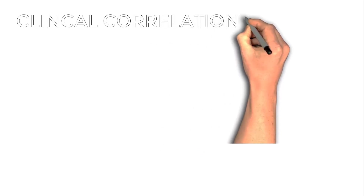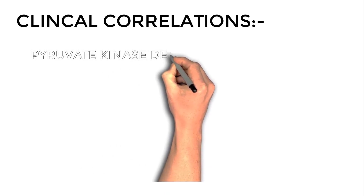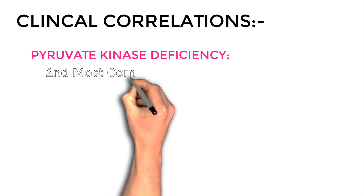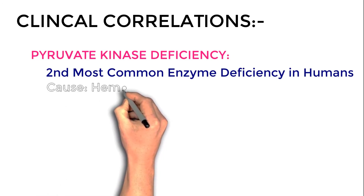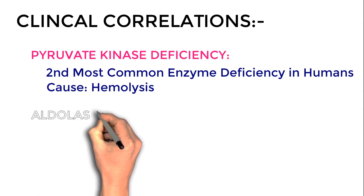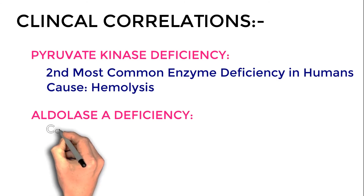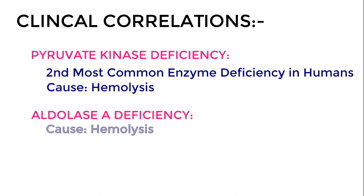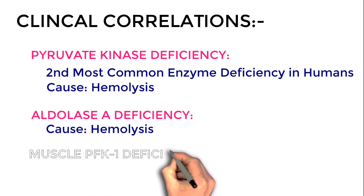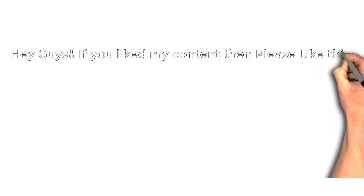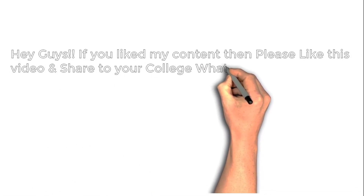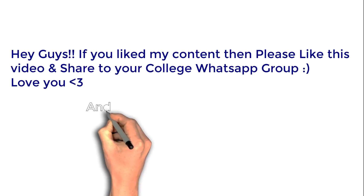Clinical correlations: Pyruvate kinase deficiency is the second most common enzyme deficiency in humans and causes hemolysis. Aldolase A deficiency also leads to hemolysis. Muscle PFK-1 deficiency causes exercise intolerance. If you like this content, please like and share this video with your colleagues and subscribe to my channel.